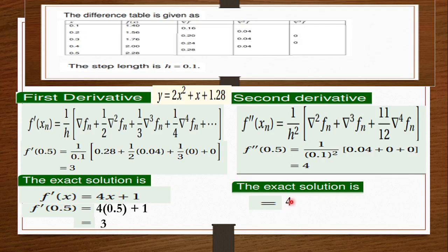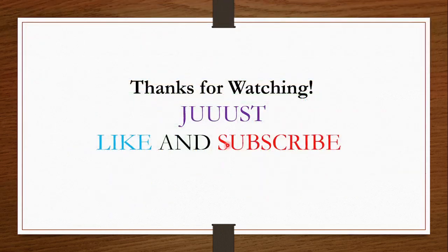To summarize: for the forward difference we take values from the top of the table, while for the backward difference we take values from the bottom. Once you find those values, you plug them into the formula and you have your solution. That's it for this video — like and share with your friends, and leave any questions in the comments. Until next time!